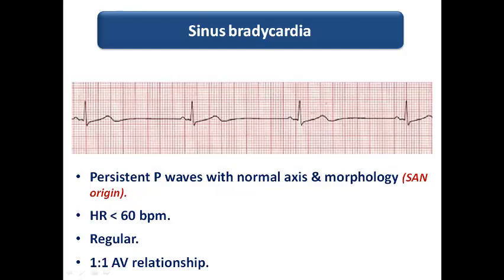We can expect the ECG criteria of sinus bradycardia: persistent P waves with normal axis and morphology, since P waves originate from the SA node. In a patient with no structural heart disease, P waves have normal morphology and duration. The axis is normal — positive in inferior leads, negative in aVR, and negative or biphasic in V1. Heart rate is less than 60 per minute, regular, with one-to-one AV relationship provided the AV node is intact.